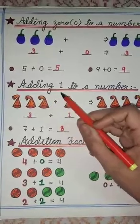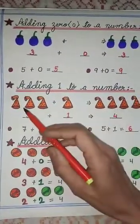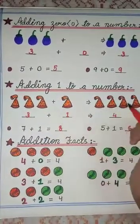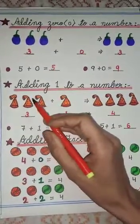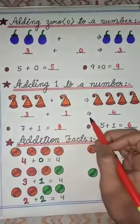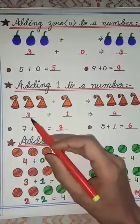Now next is adding 1 to a number. What will happen if we add 1? So here we have some caps and we have added 1 to it. Then we have got the answer which is 1 more to the number which we had earlier. Like 3 plus 1 gives 4. 4 is 1 more than 3.